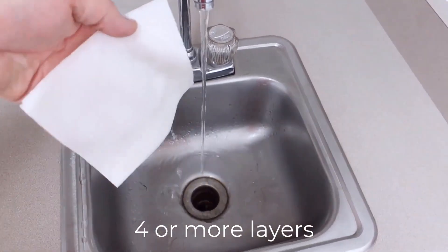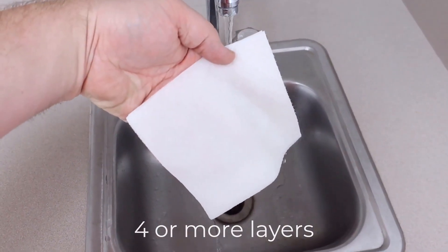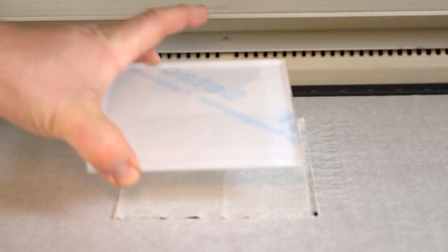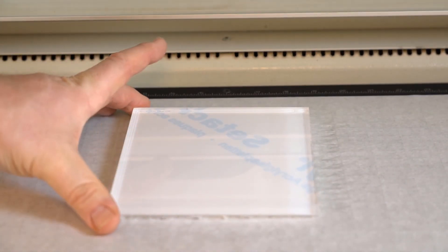Now place the wet paper towels onto your cutting table and place the acrylic onto the wet paper towels.